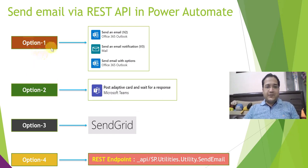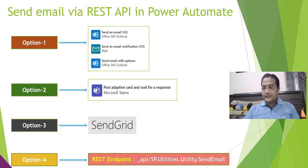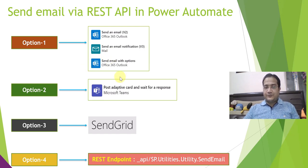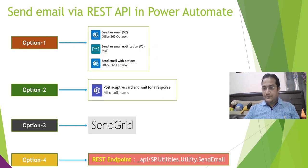I will be talking about option one. We already know that there are multiple inbuilt actions in Power Automate already available to send emails. For example, send an email version one or version two, send an email notification, send email with options, and many more. This is option one of sending emails in Power Automate.